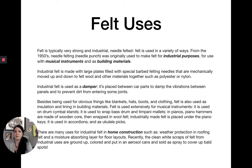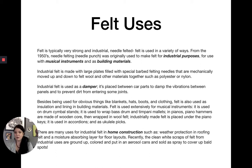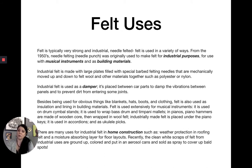Beyond blankets, hats, boots, and clothing, felt is also used as insulation and lining in building materials. It's used a lot for musical instruments — on drum cymbal stands to dampen vibration, to wrap bass drum and tympani mallets. In pianos, the piano hammers are made with a wooden core wrapped in wool felt. Industrial felt is also placed under piano keys so they don't clank, and it's used in accordions and to make ukulele picks.